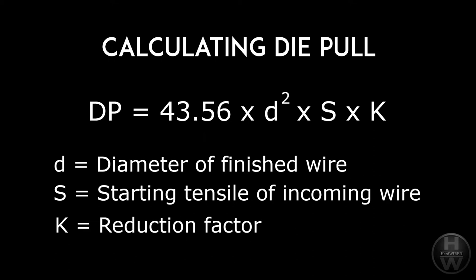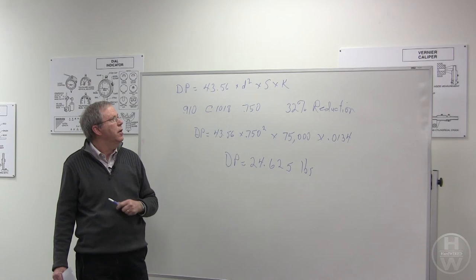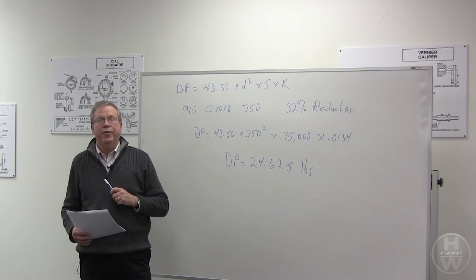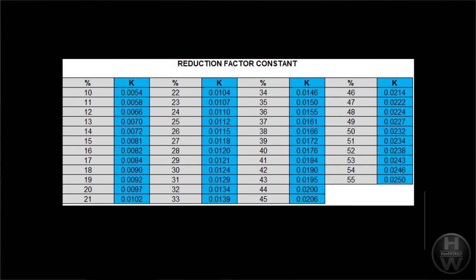And that diameter is the diameter of the finished wire that we're drawing times S, where S is the starting tensile of the incoming product, times K, and K is a constant related to certain percentages of reductions. And that factor, K factor, can actually be determined off a chart that is listed on page 263 of the Wire Association Volume 1 handbook.